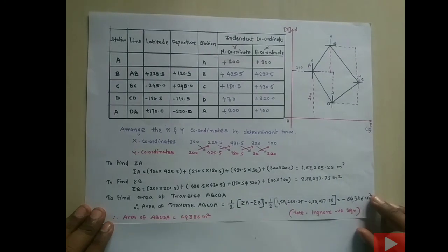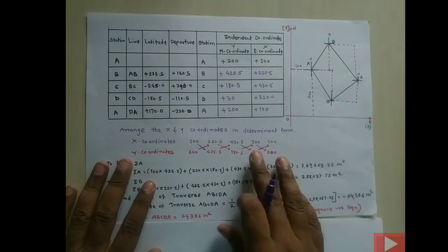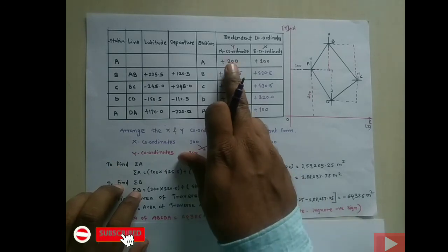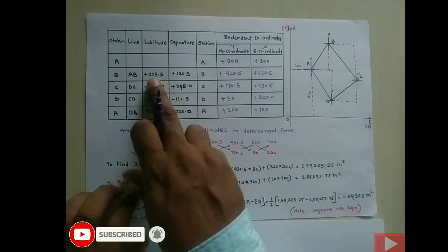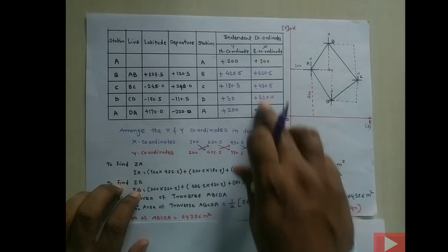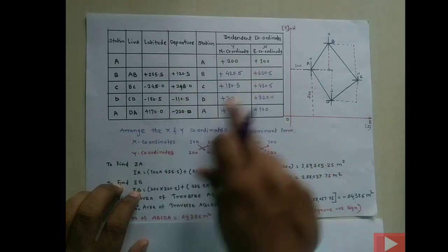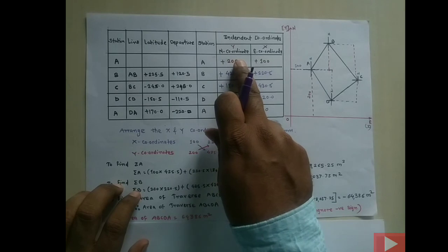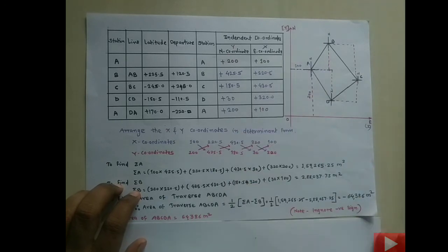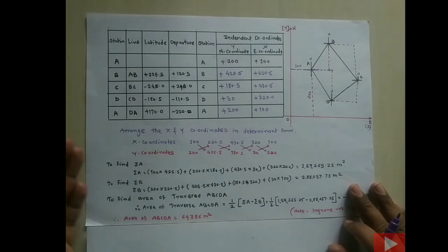In this way, you can calculate the area of a closed traverse using the independent coordinate method, and this approach can fetch you six marks in the university paper. To summarize: first tabulate latitudes and departures; then assume coordinates of point A; compute Y coordinates using latitudes (add for northing, subtract for southing); compute X coordinates using departures (add for easting, subtract for westing); verify by checking that the last coordinate equals the first; arrange in determinant form; and apply the area formula.